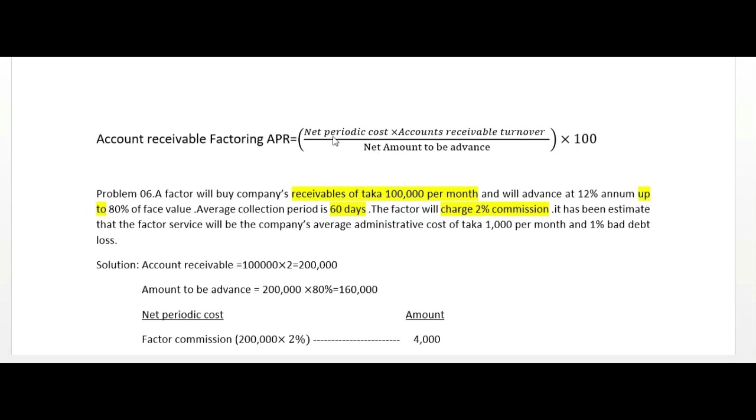The formula uses net periodic cost, account receivable turnover, and net amount to be advanced. Let's look at a question. Problem: A factor will buy company's receivables of 100,000 per month and will advance 12 percent. Average collection period is 60 days.